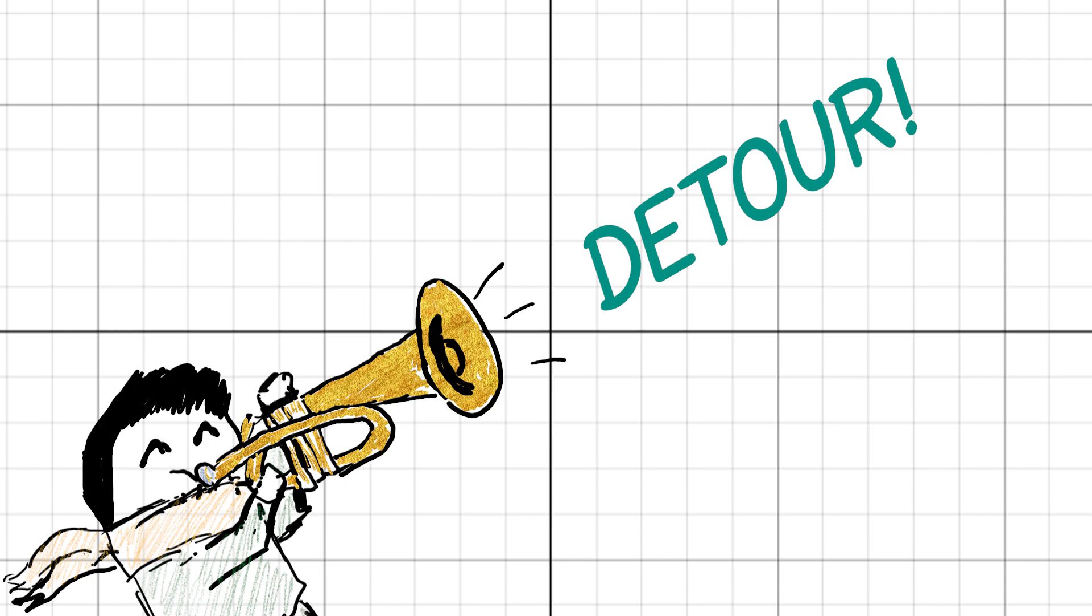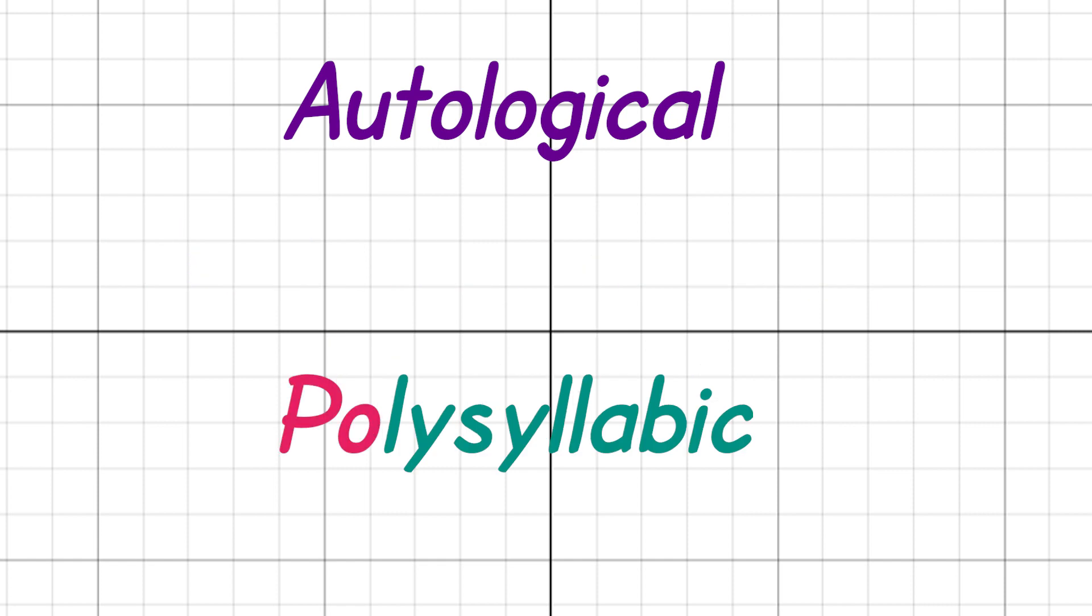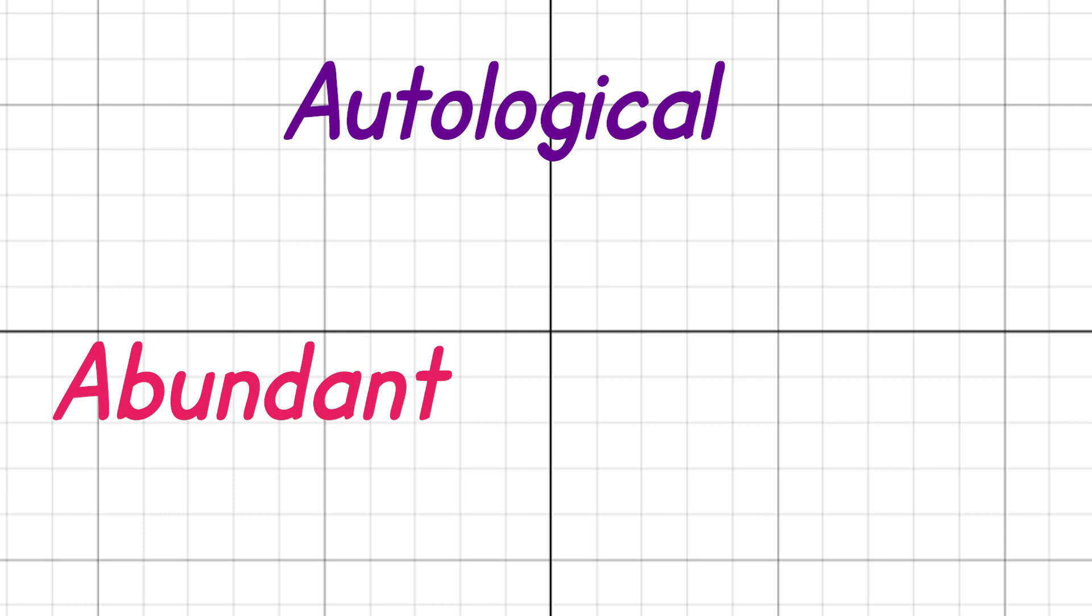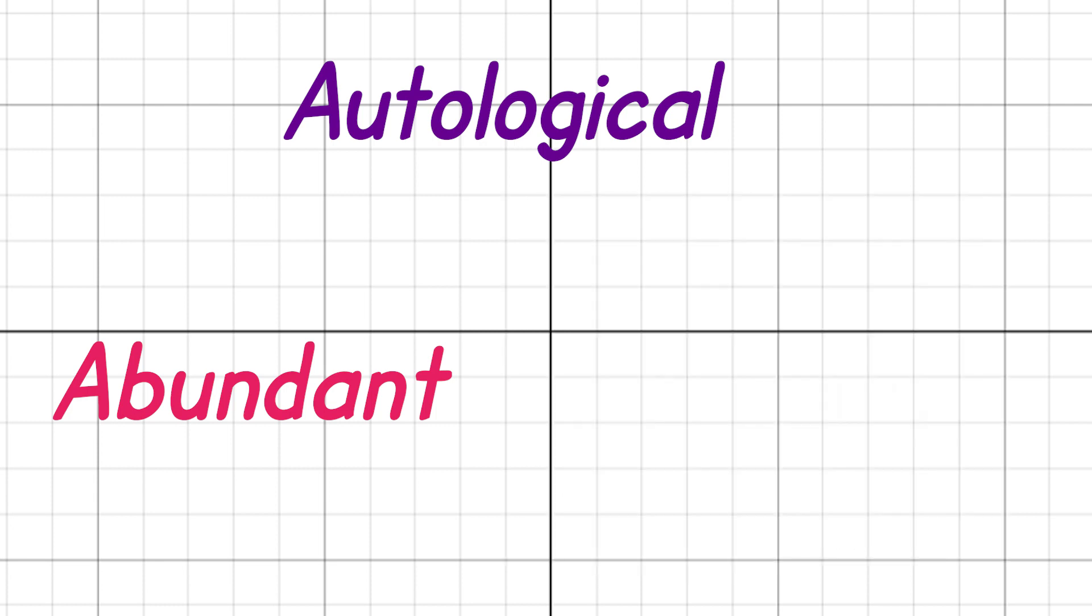Detour! Words that describe themselves are called autological. The typical example is polysyllabic, which is a polysyllabic word. Normally, the word abundant does not describe itself, but in this context it does, because it's abundantly present in the diagram. It's autological in this particular context.